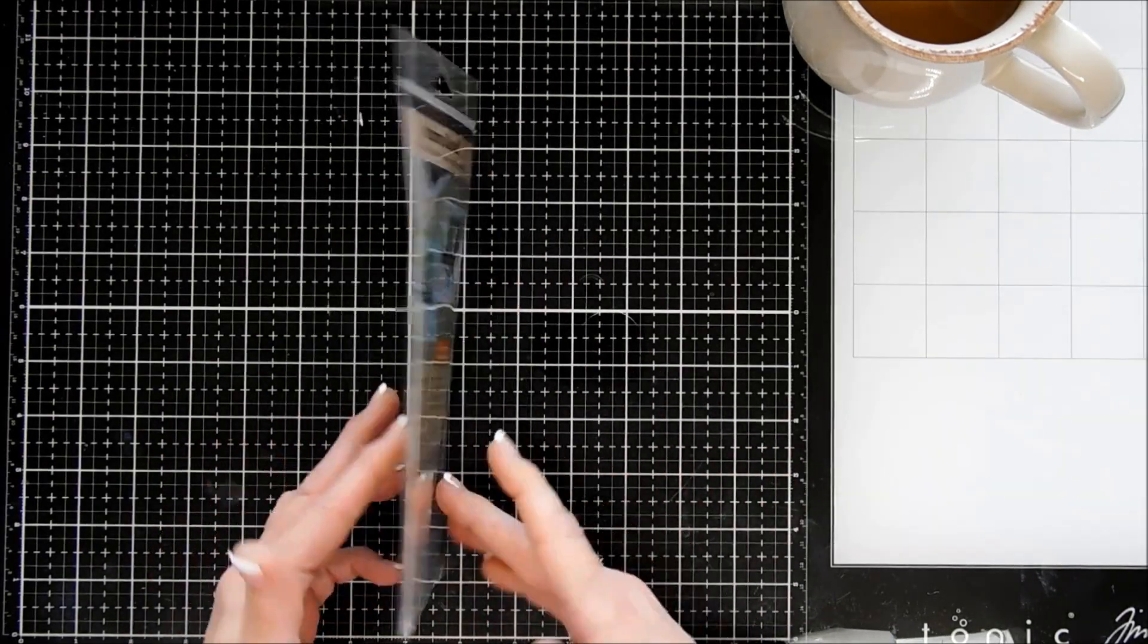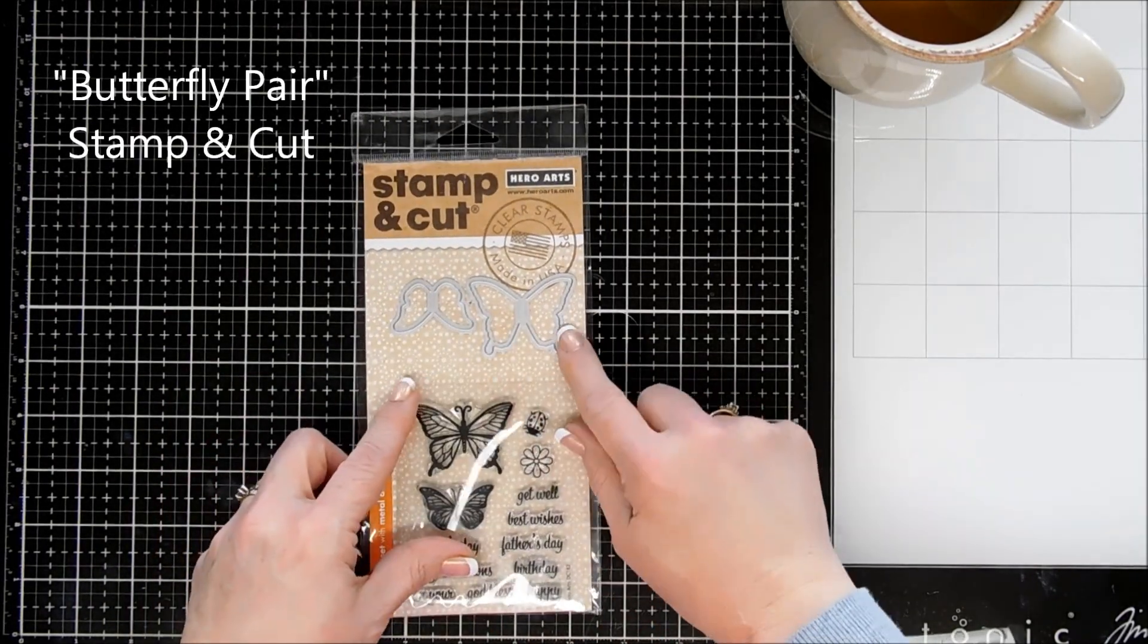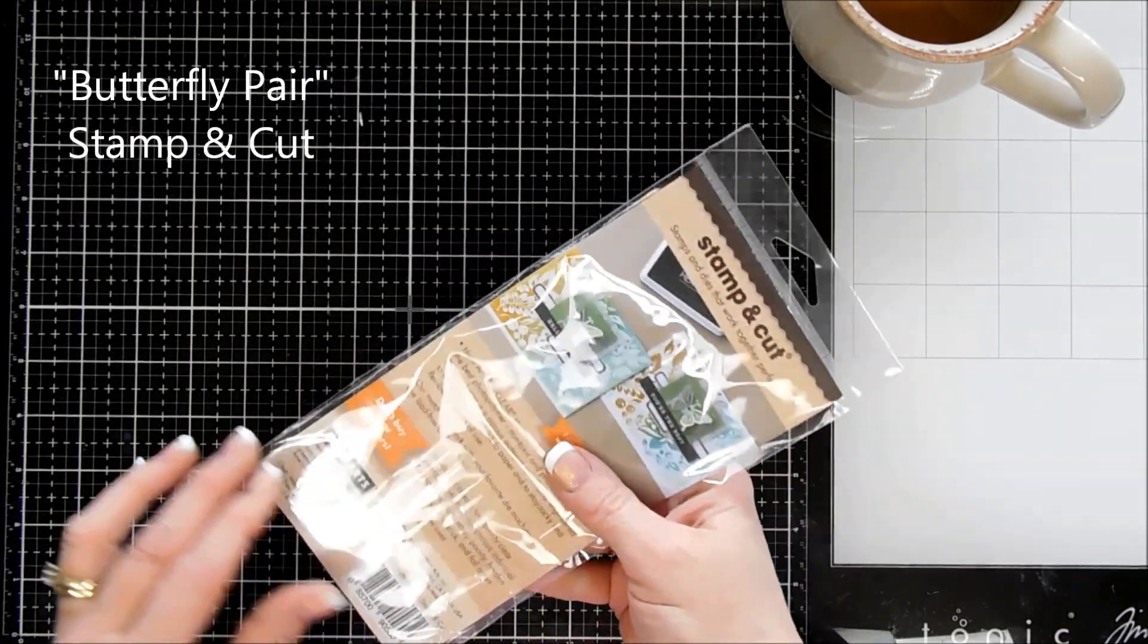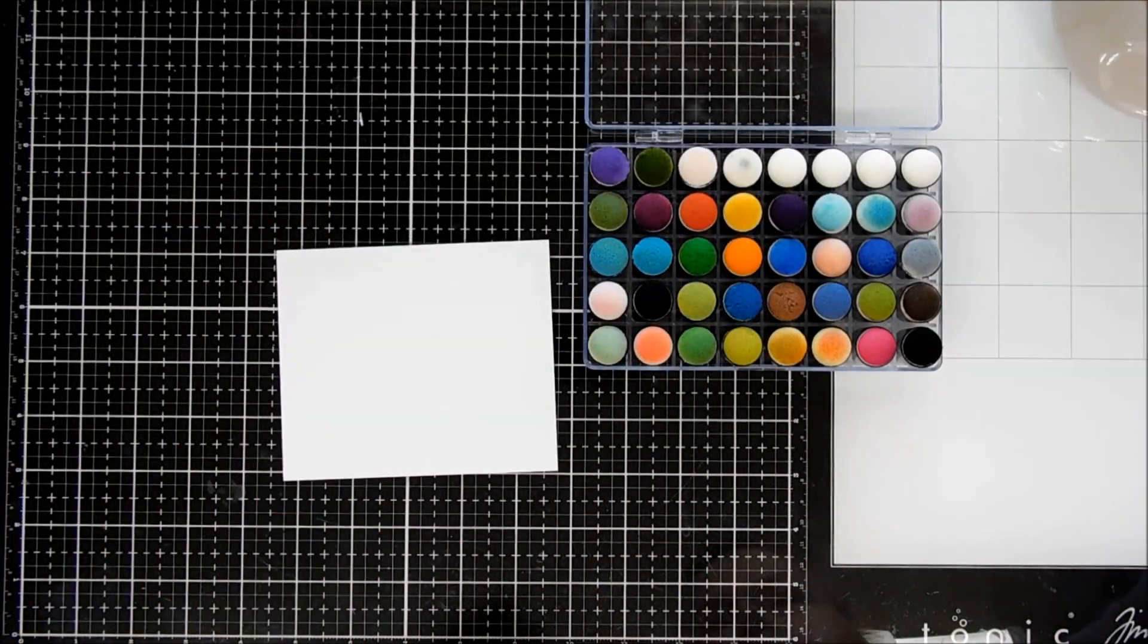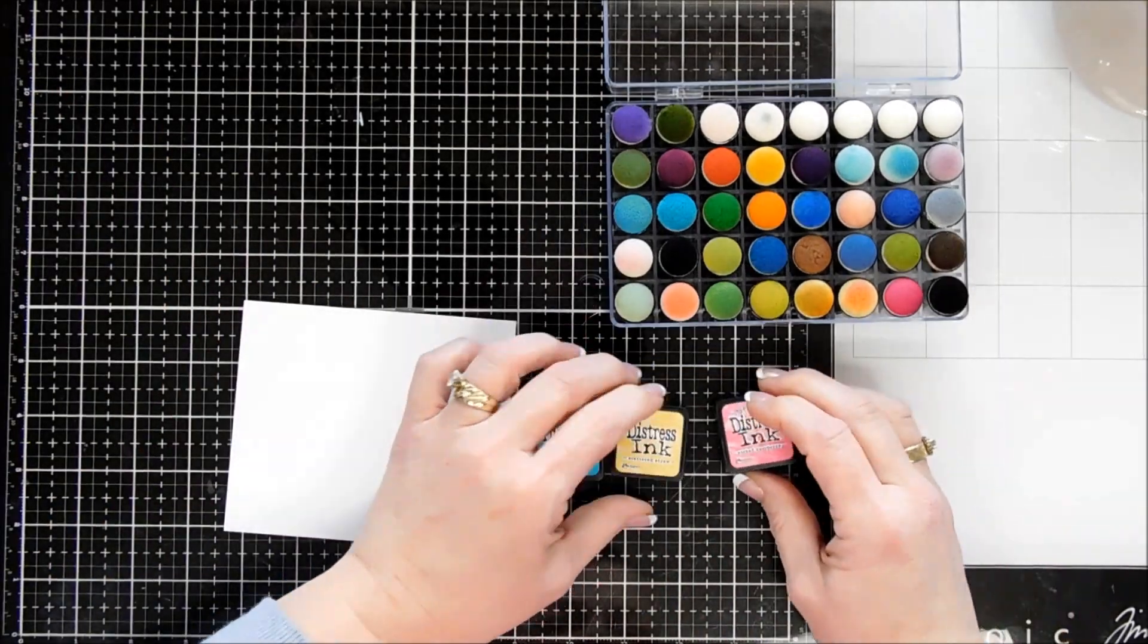So today we're trying out the Stamp and Cut set from Hero Arts. I picked this up because I love the butterflies. I've mentioned this before but I love the Stamp and Cut sets because of the price point. You get dies and the stamp set for a pretty nice price.